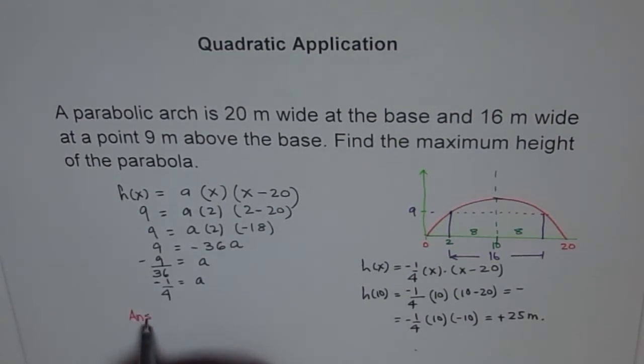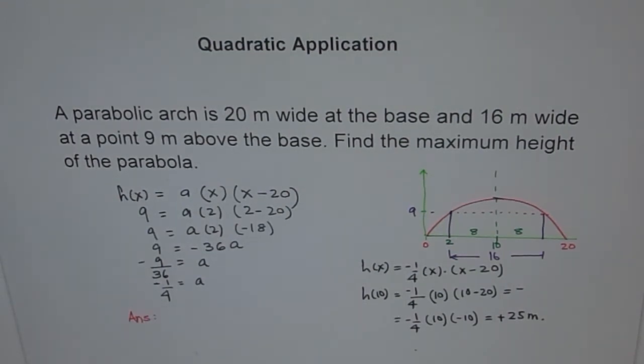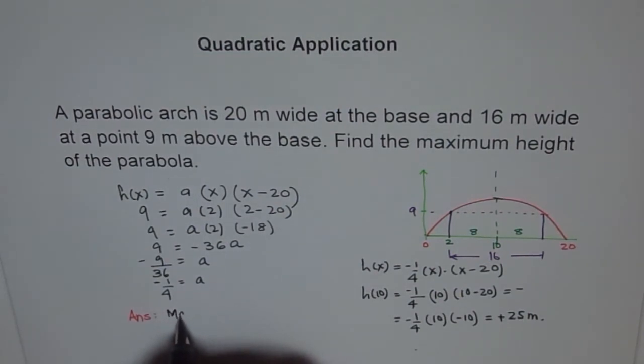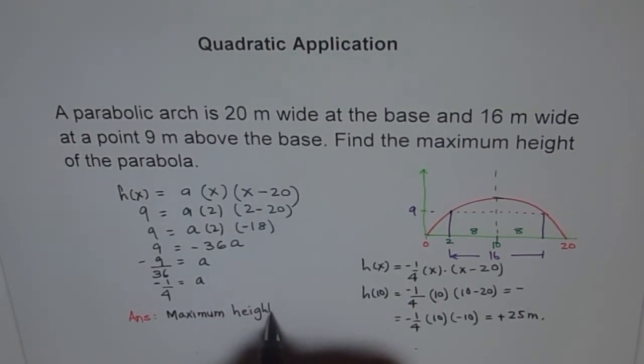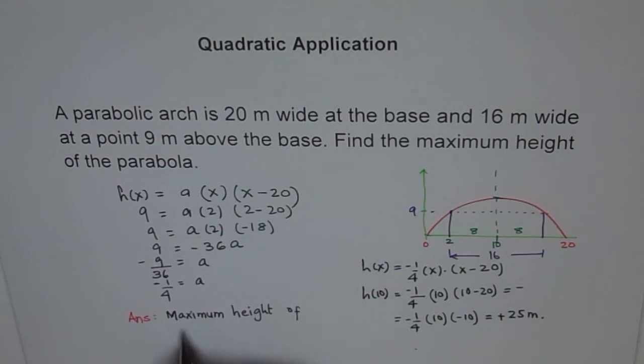After finding the equation it was very simple. So therefore now we can write down our answer in words. Okay. So answer is, maximum height of parabola is how much? 25 meters.